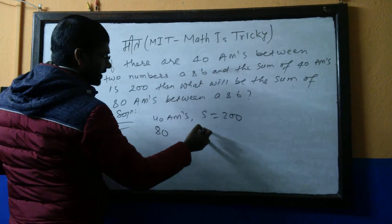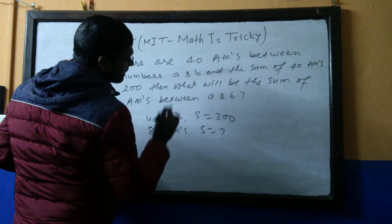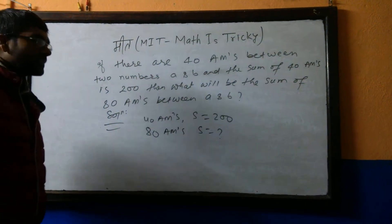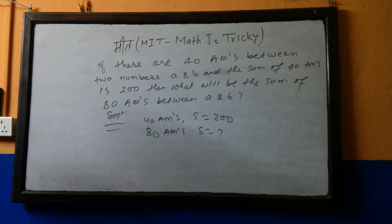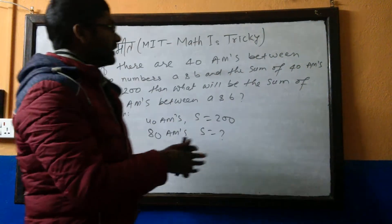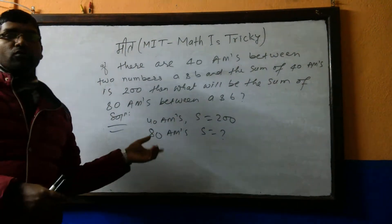Now we have to find, if the number of AMs is 80, what will be the sum? Between the same numbers. So how will we solve this? Actually, for those who know the formula, let me solve this first by process and then I will share the trick.